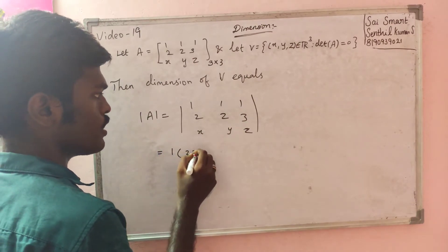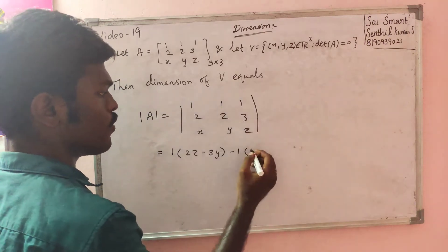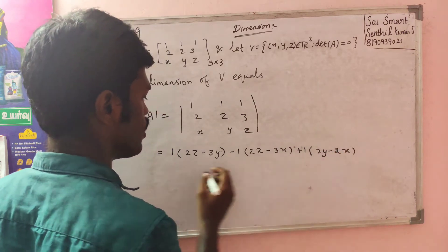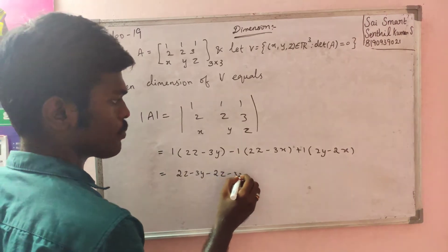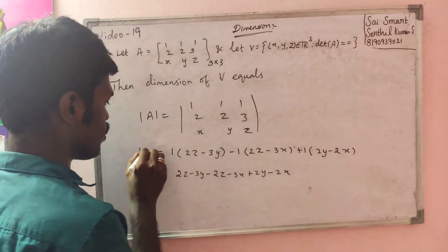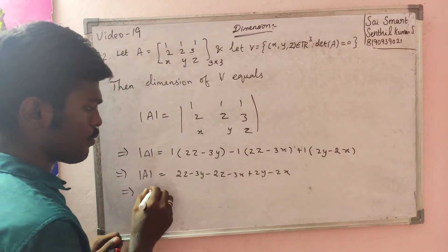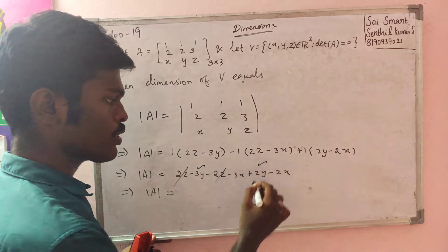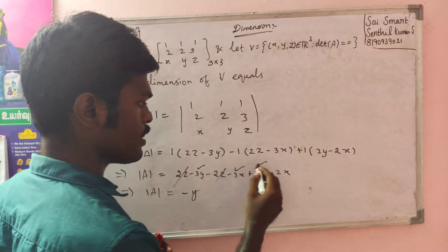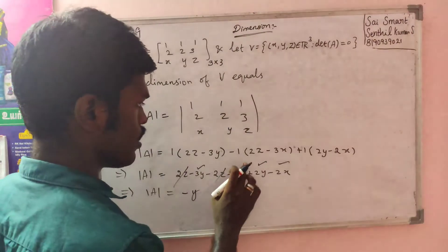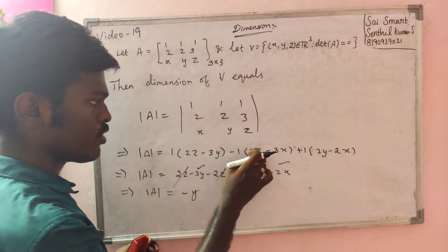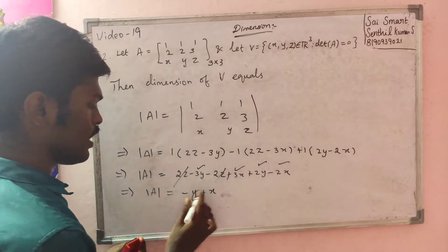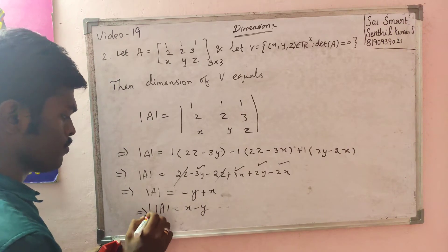If we take 1/2z minus 3y minus 1/2z minus 3x plus 2y minus 2x, we compute the determinant of A. Simplifying: 2z and 2z cancel. Then minus 3y plus 2y gives minus y. Minus 3x minus 2x — this is minus minus, so plus. Minus 2z, minus minus plus. So 3x plus x minus y. This means the determinant of A is equal to x minus y.